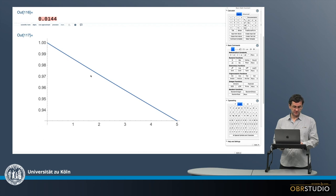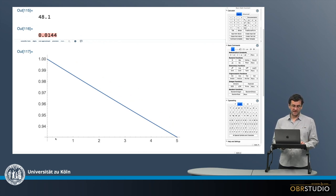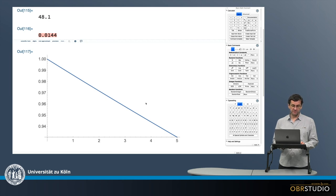And then down here I have the according plot. Now this looks quite linear here, which is because I only plotted from 0 to 5 billions of years.